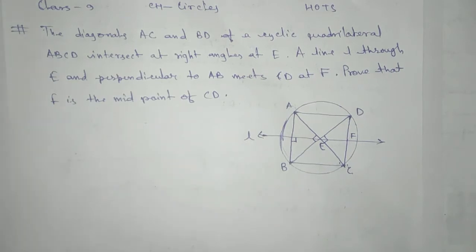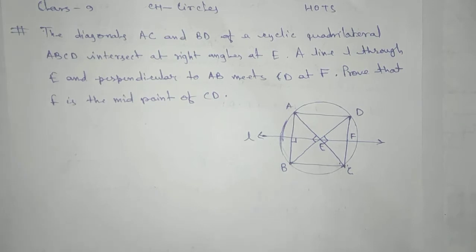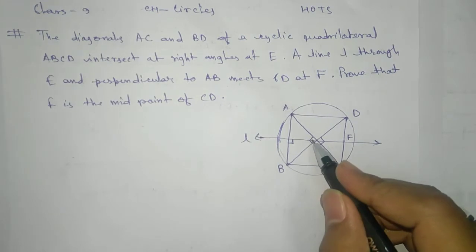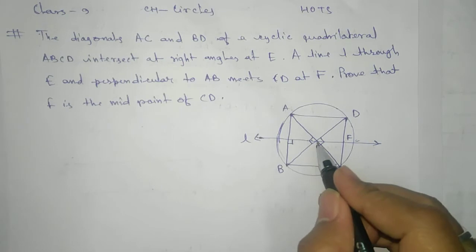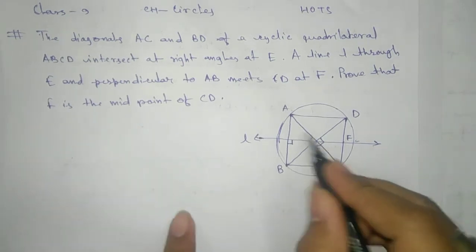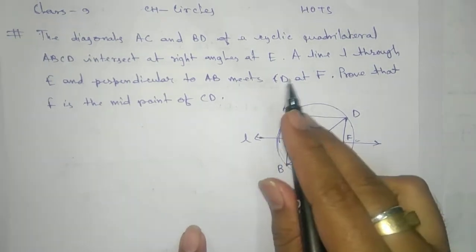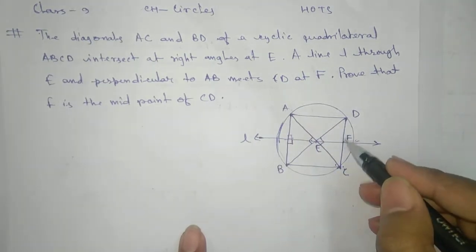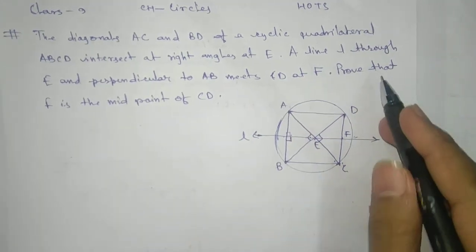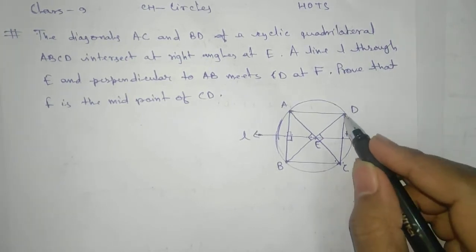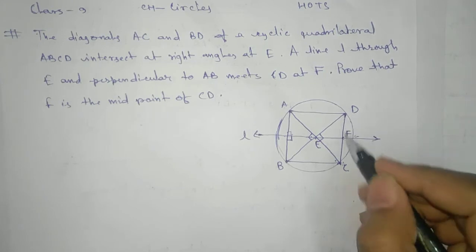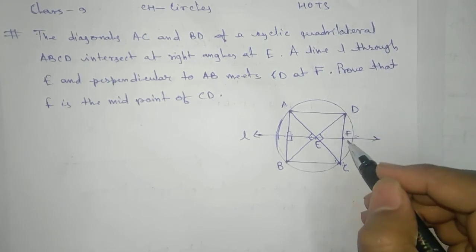Namaste students, here we have another problem related to circles — a higher order thinking skill question. The diagonals AC and BD of a cyclic quadrilateral ABCD intersect at right angles at E. A line passes through E and perpendicular to AB meets CD at F. Prove that F is the midpoint of CD, that means we need to show that DF equals CF.